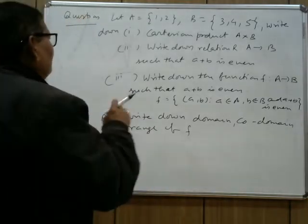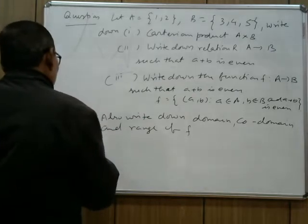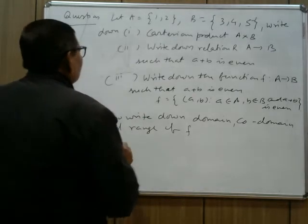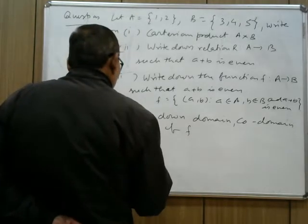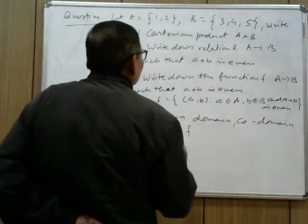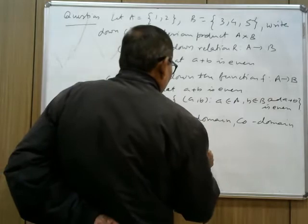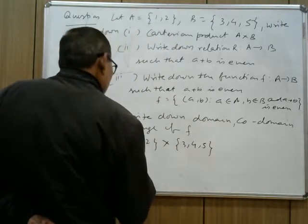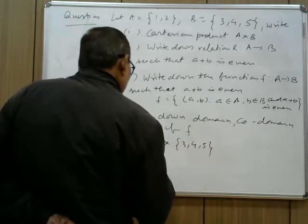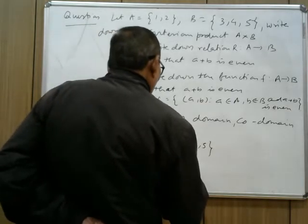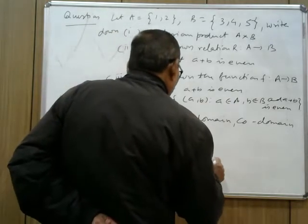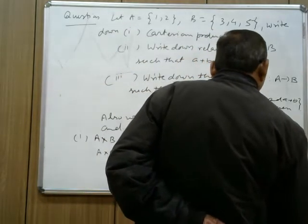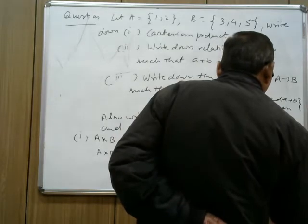So from where we start — we have started from Cartesian product, then to relation, then to function. For the first part, your A cross B: set A is {1,2}, cross B is {3,4,5}. You can write A cross B as: (1,3), (1,4), (1,5), (2,3), (2,4), and (2,5).